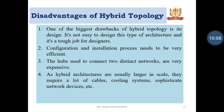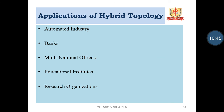Disadvantages of Hybrid Topology: One of the biggest drawbacks of hybrid topology is its design — it is not easy to design this type of architecture, and configuration and installation needs to be very efficient. The hubs used to connect two different networks are very expensive. As hybrid network architectures are usually larger in scale, they require a lot of cables, cooling systems, sophisticated network devices, etc. Applications of hybrid topologies include automated industries, banks, multinational offices, educational institutes, and research organizations.